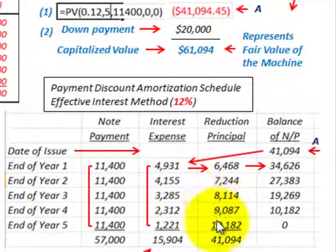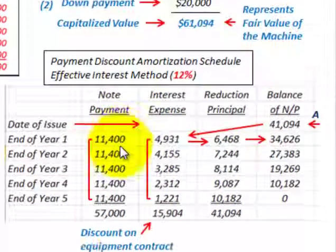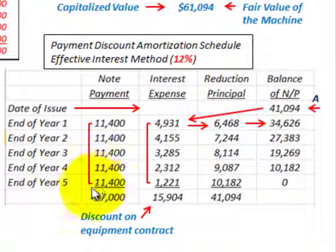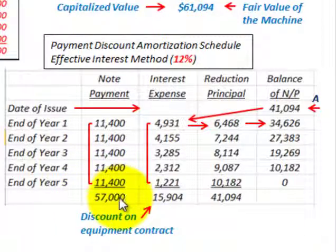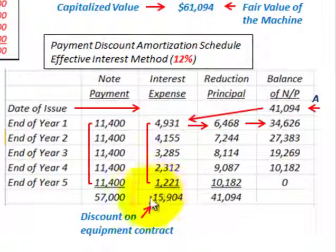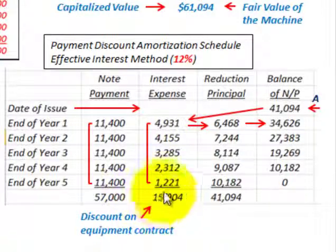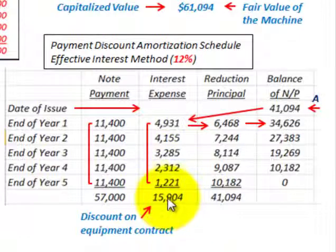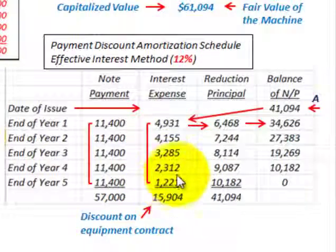Continuing to amortize the schedule down, the total payments amount to fifty-seven thousand dollars. The total interest expense represents the discount on the equipment contract, and that total amount is fifteen thousand nine hundred and four dollars.